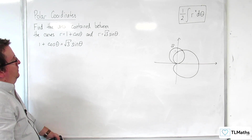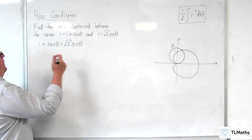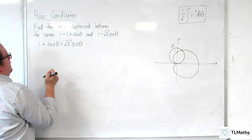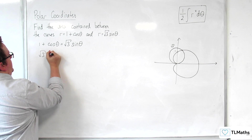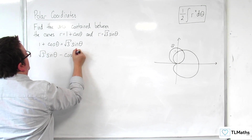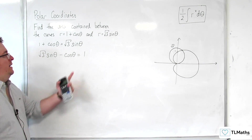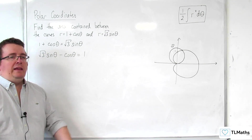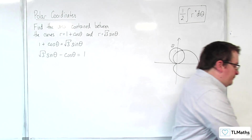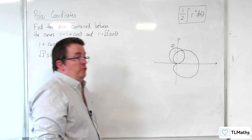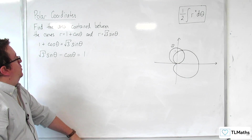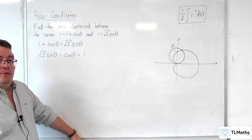Setting 1 plus cosine theta equal to root 3 sine theta, and rearranging, we get root 3 sine theta minus cosine theta equals 1. If this had been equal to 0 it would have been easy — we could have divided through by cosine theta and solved a tan equation — but unfortunately we can't do that here.